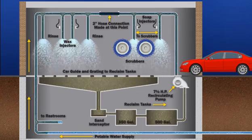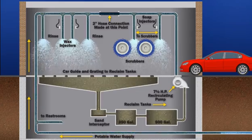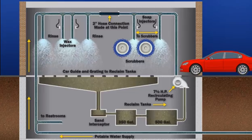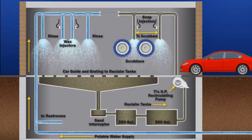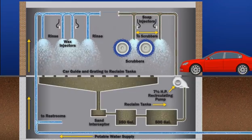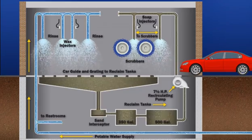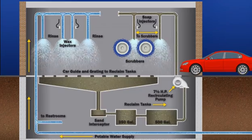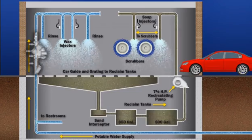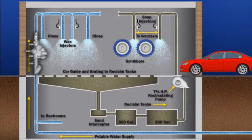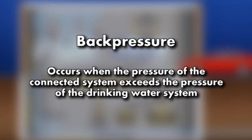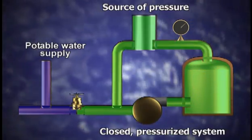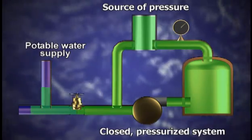The pump forced the contents of the two reclaimed tanks — 850 gallons — into the drinking water main. It didn't take long before a car wash employee noticed brown soapy water in the restroom. The cross-connected two-inch hose was immediately removed, but not before contaminating an eight-block area. The water mains were flushed and chlorinated by the water department, and a reduced-pressure principle backflow prevention device was ordered installed on the water service pipe to provide premise isolation. As you can see, back pressure occurs when the pressure of the connected system exceeds the pressure of the drinking water system, and a higher pressure could force the water to reverse its normal flow, allowing contamination in the drinking water system.